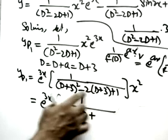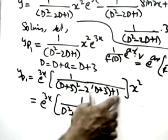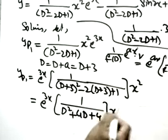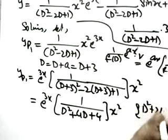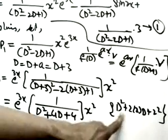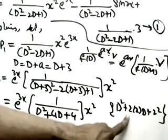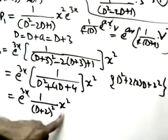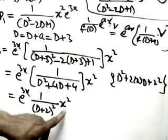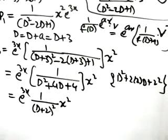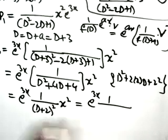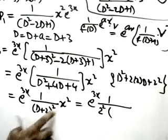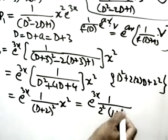The denominator D² + 4D + 4 = (D+2)². So yp1 = e^(3x)·(1/(D+2)²)·x². For binomial expansion we factor out 4: yp1 = (e^(3x)/4)·(1/(1 + D/2)²)·x². Bringing to the numerator: = (e^(3x)/4)·(1 + D/2)^(−2)·x².